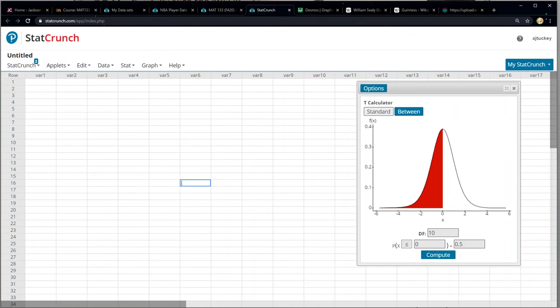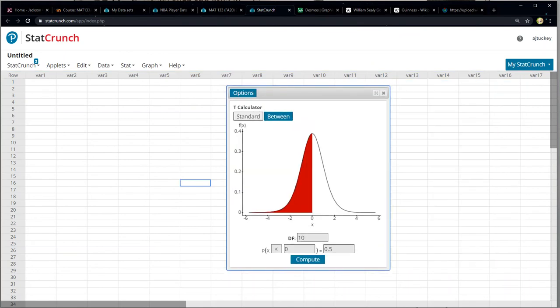And there you have it. So there's a T curve. And I would click between. And then my degrees of freedom. So that'll be very important. You'll have to put that in every time. So did we write that down?